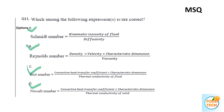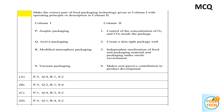Make the correct pair of food packaging technology given in Column 1 with the operating principle or description in Column 2. Column 1 includes: aseptic packaging, active packaging, and vacuum packaging — which creates a skin-tight package. The answer is A.